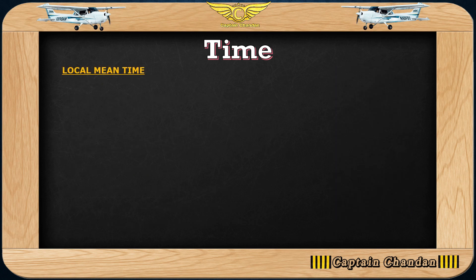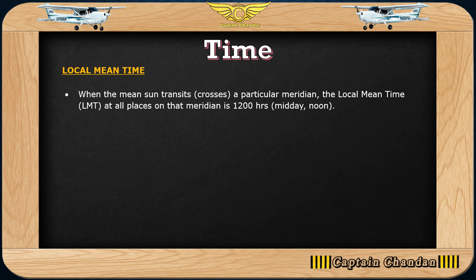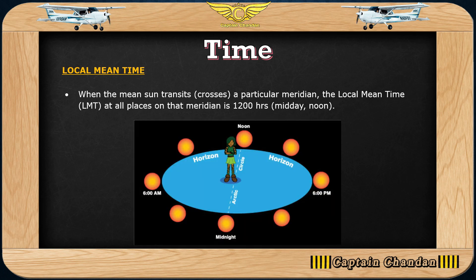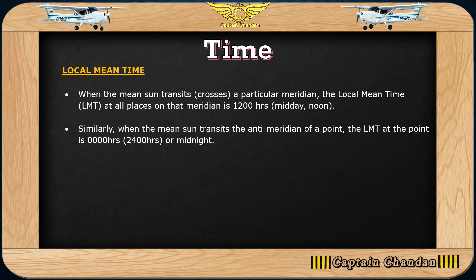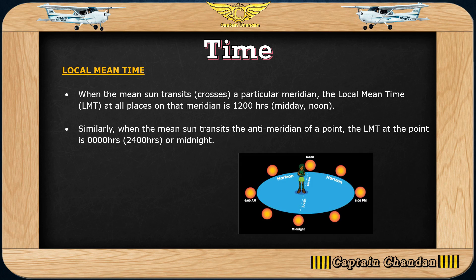Let's discuss Local Mean Time, or LMT. When the mean sun transits or crosses a particular meridian, the LMT at all places on that meridian is 1200 hours — midday or noon. When the mean sun crosses the anti-meridian of any particular longitude, the LMT at that longitude is 0000 hours, or 2400 hours — midnight — and after that midnight the date changes.